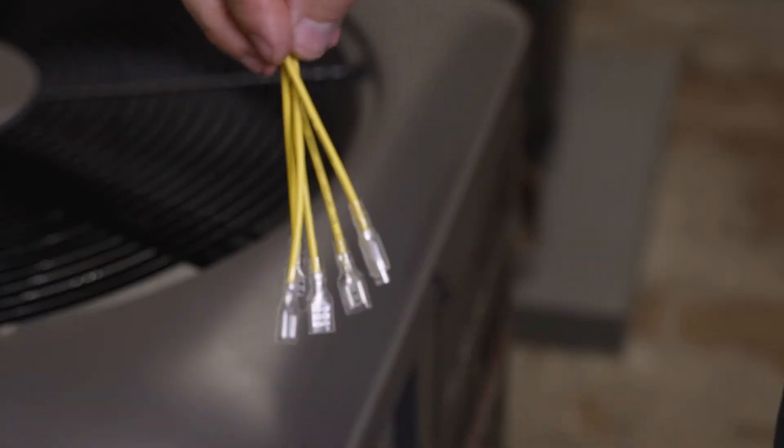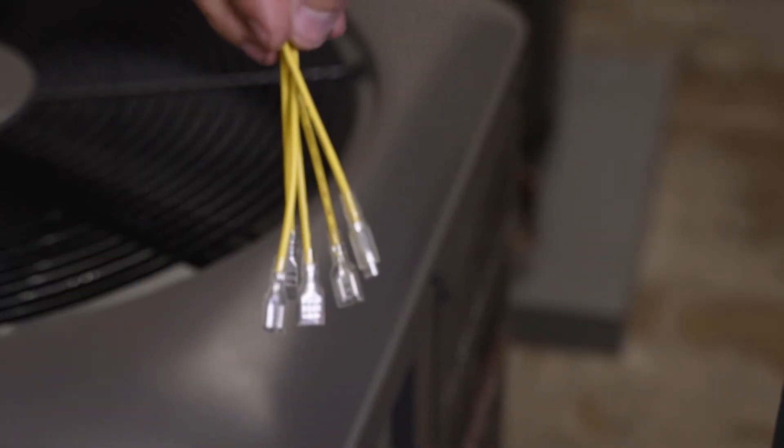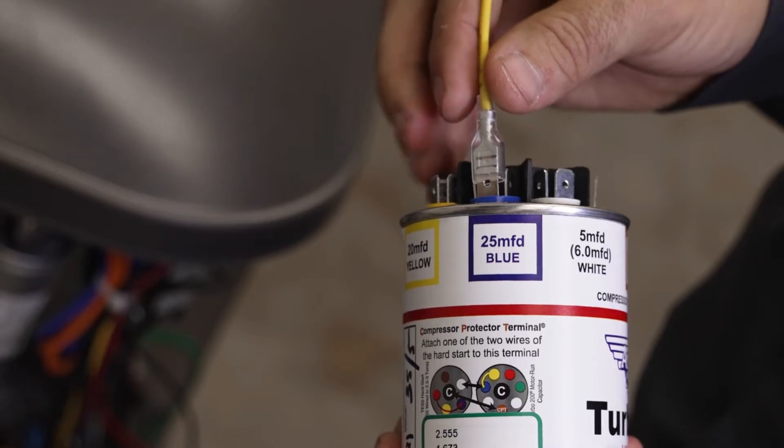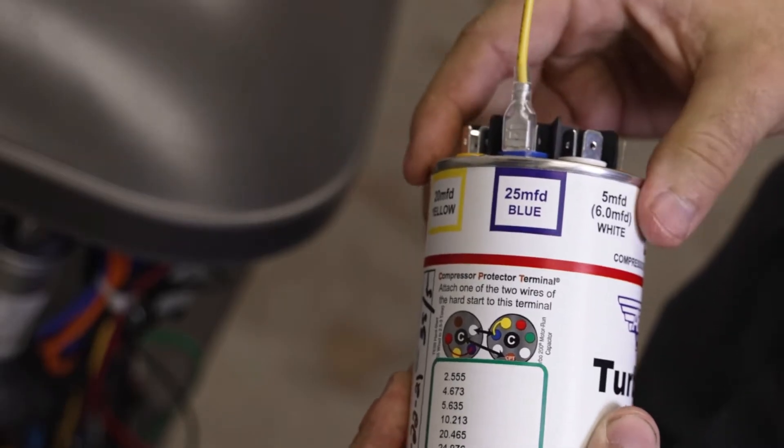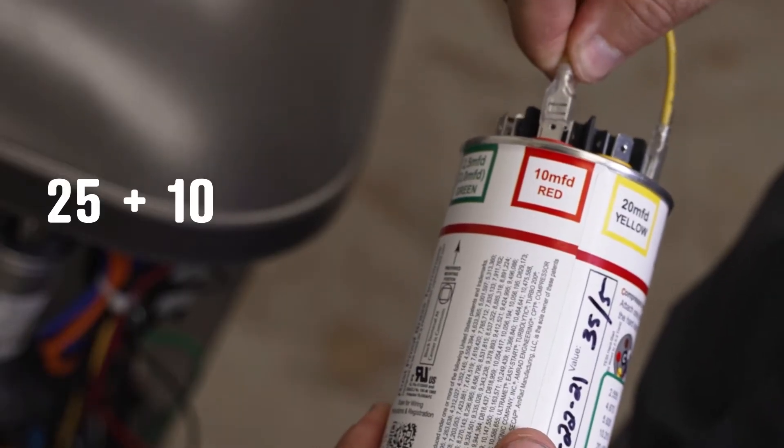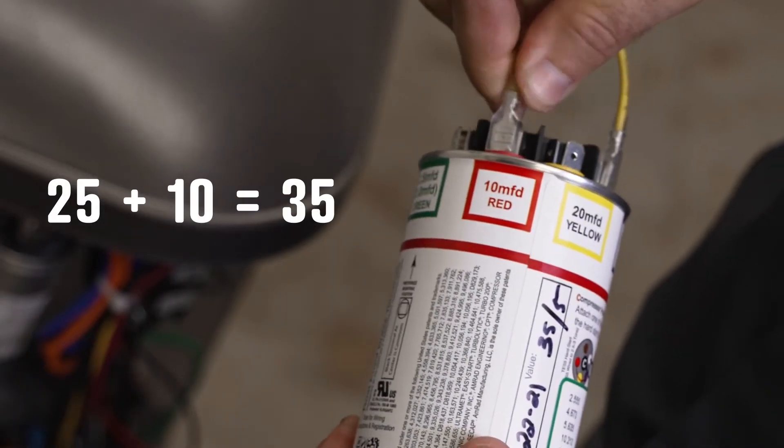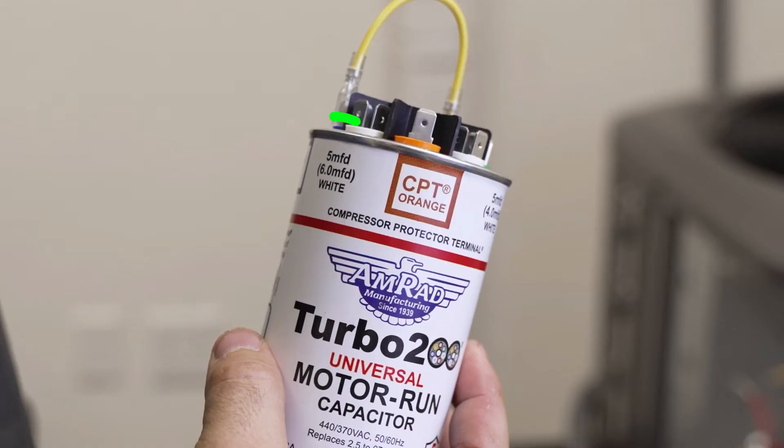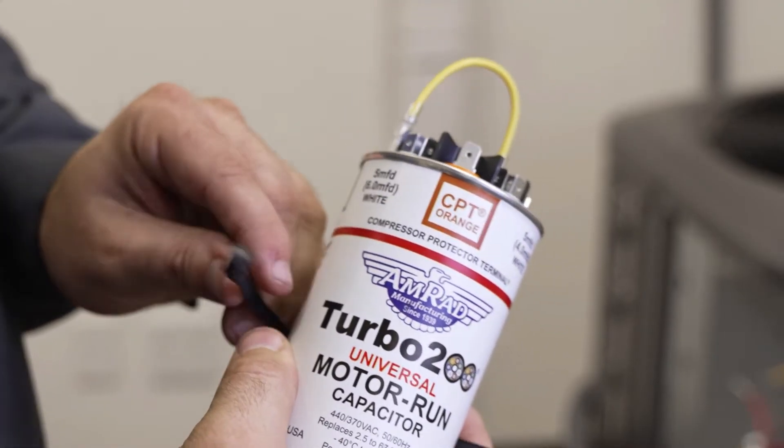Every turbo comes with included jumper wires. We're going to use these and simple addition to reach our needed 35 MFD value. We'll connect the 25 MFD terminal to the 10 MFD terminal to equal 35 total. For our fan value, we'll use the 5-6 MFD terminal.